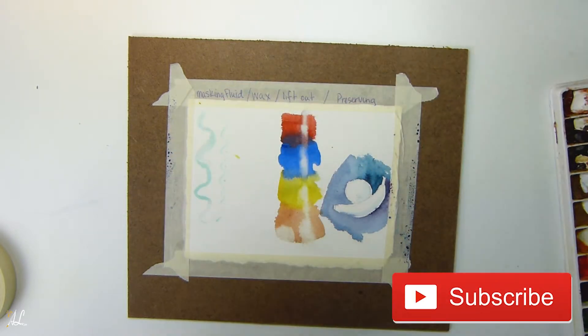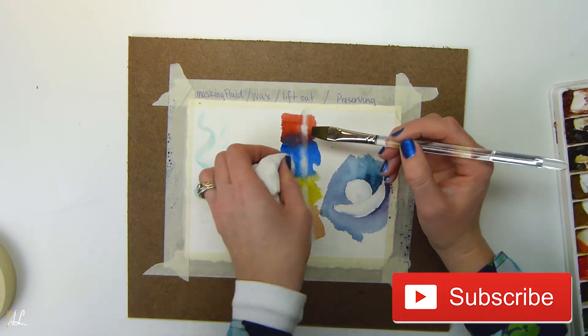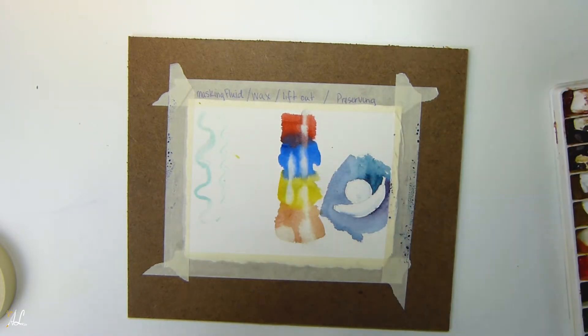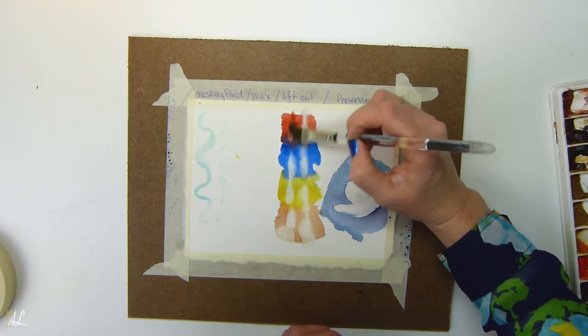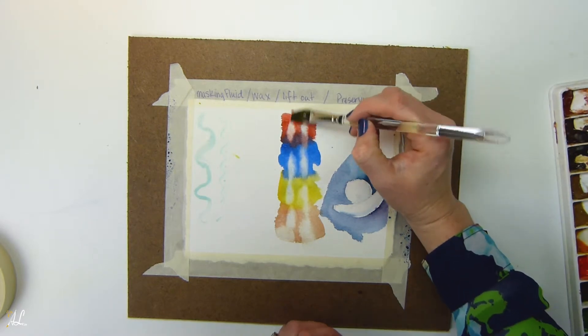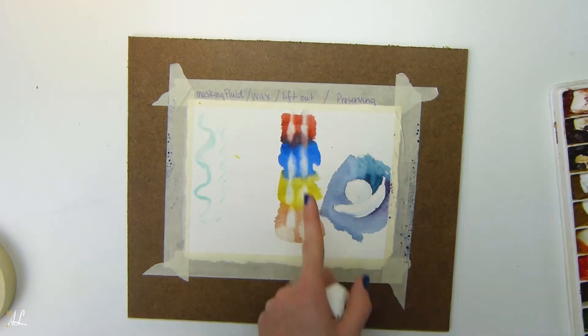You can do the same thing with your blue, your yellow, and your brown. Let's see how well that works. See this red is going to be a little bit more difficult just because it is more of a staining color. So once it's dried it's kind of on there. Not too bad.